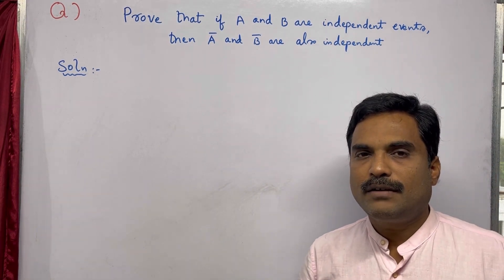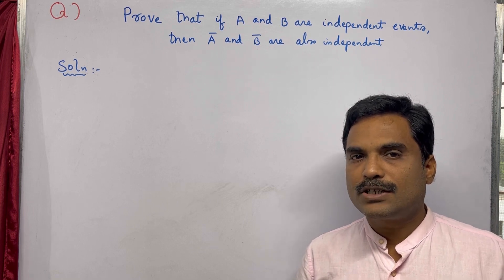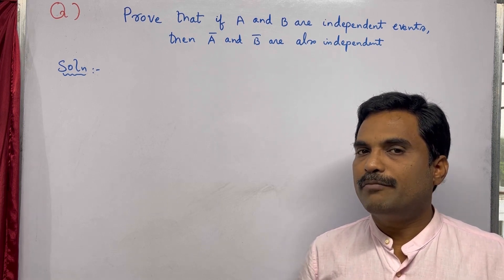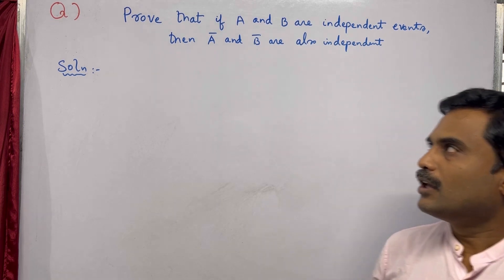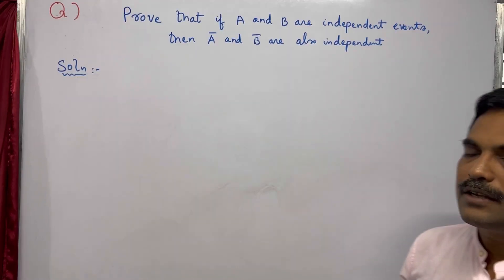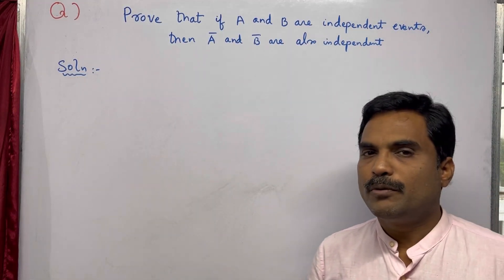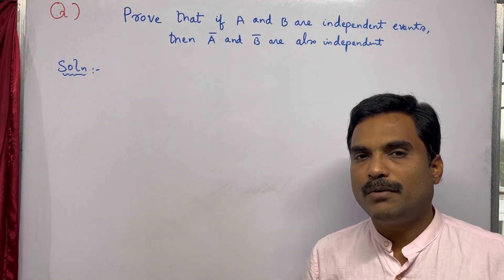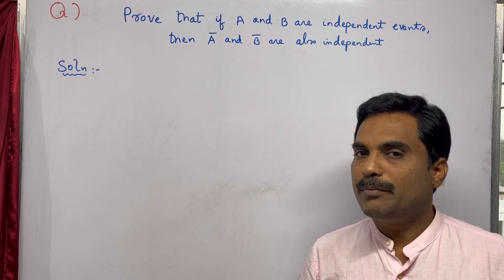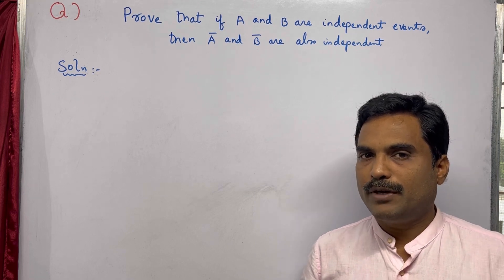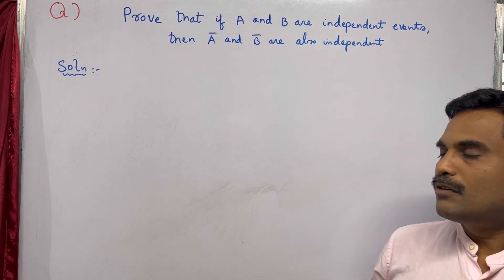In this problem it is given that A and B are independent events, which means P(A ∩ B) = P(A) · P(B). Now we need to prove that A-bar and B-bar are also independent, meaning we need to prove that P(A-bar ∩ B-bar) = P(A-bar) · P(B-bar).